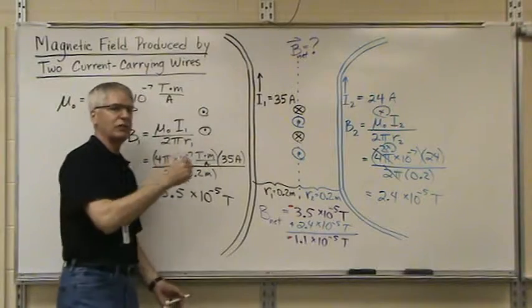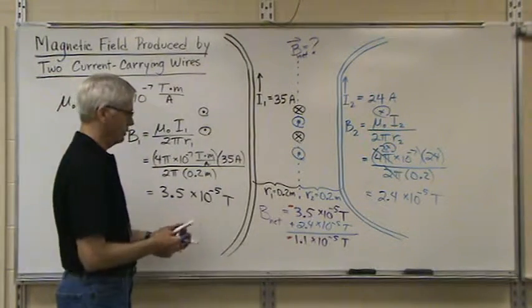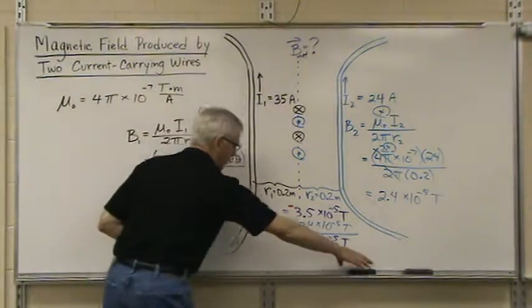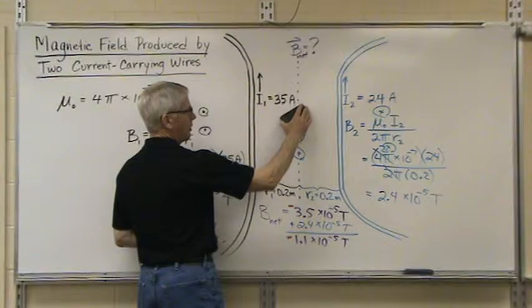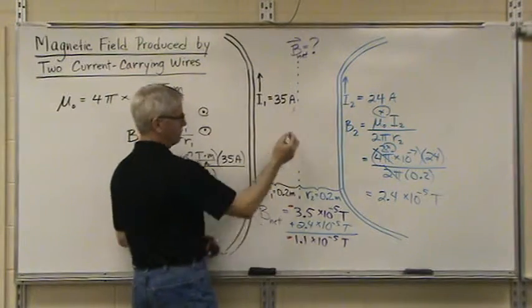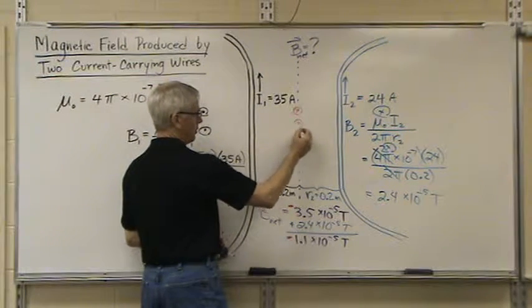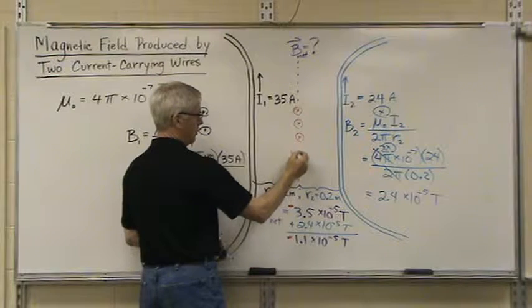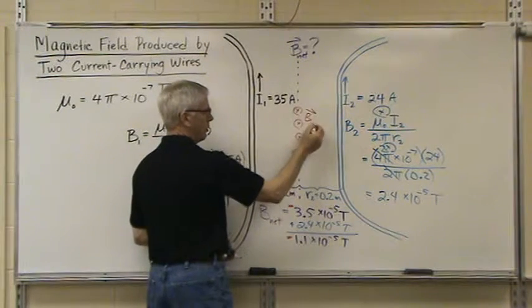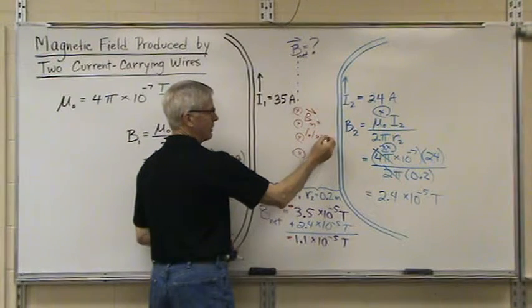The net result is negative 1.1 times 10 to the minus fifth Tesla. Because it's negative, it's into the board. So here's your net result with a value of 1.1 times 10 to the minus fifth Tesla.